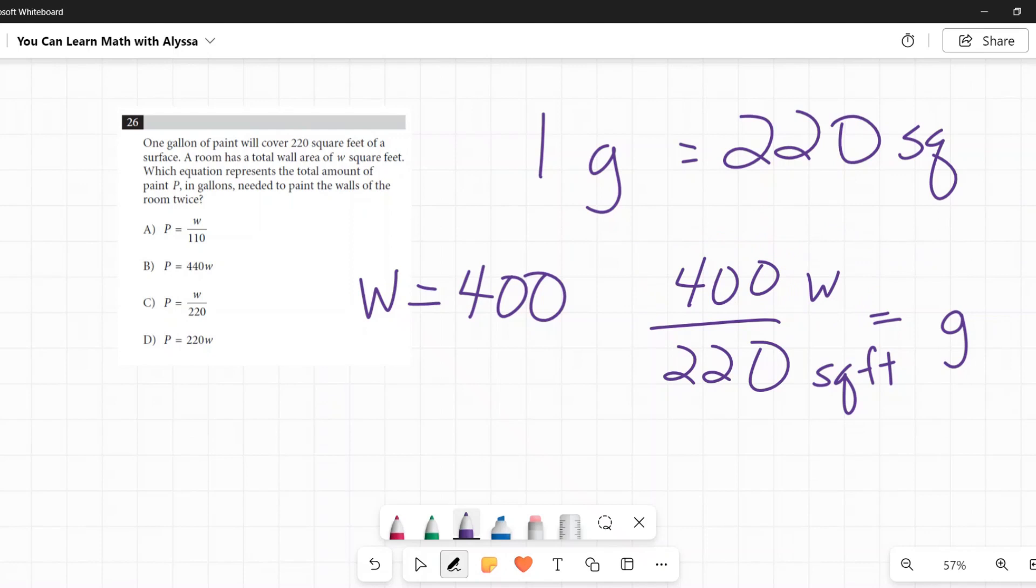Which equation represents the total amount of paint P in gallons? So they don't want us to use G, they want us to call it P. Total amount of paint P in gallons needed to paint the walls of the room twice.